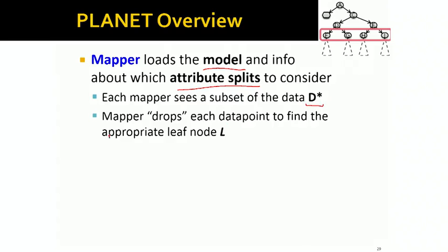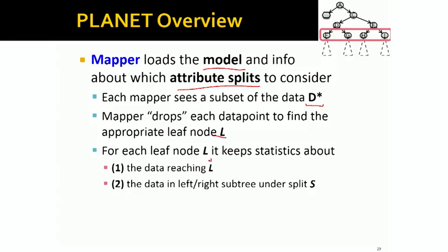The mapper drops each data point to the appropriate leaf node L. And for each leaf node L, it keeps the statistics about what is the data that reached L, and what is the data that is in the left and right sub-tree under the given split.